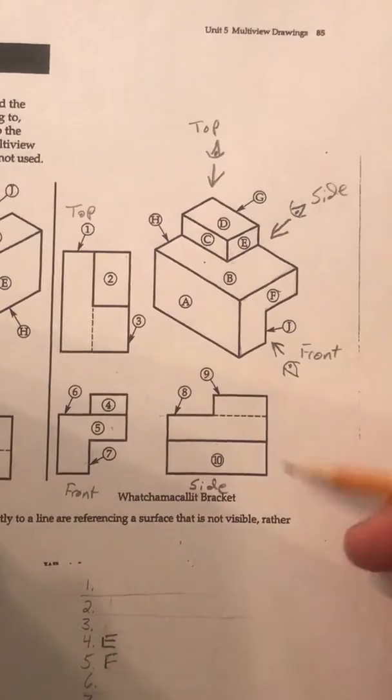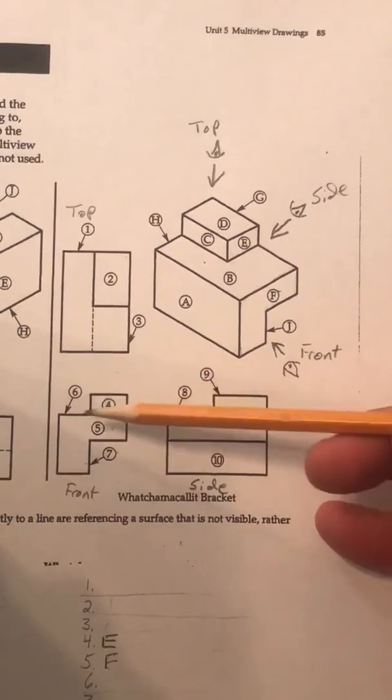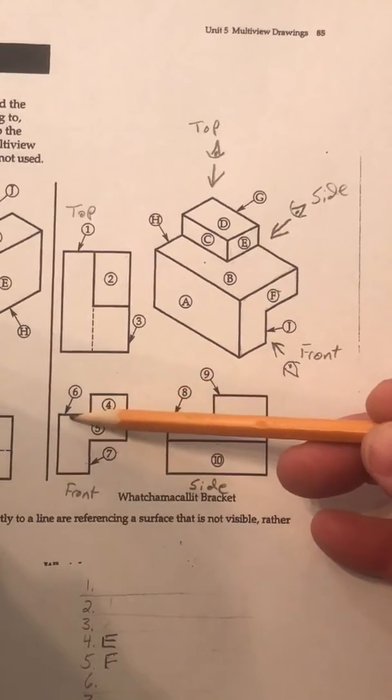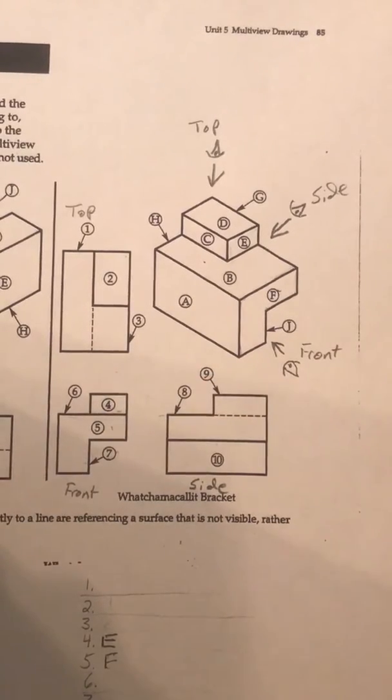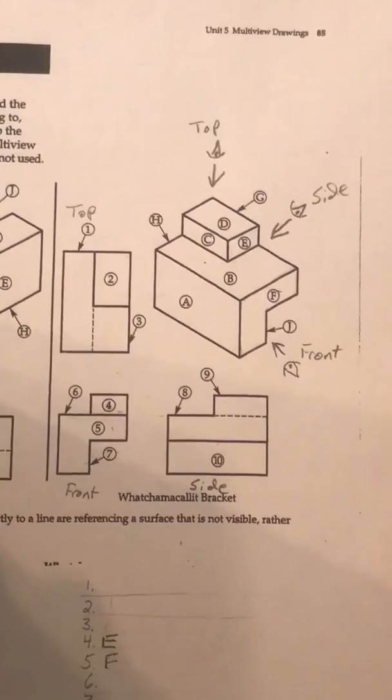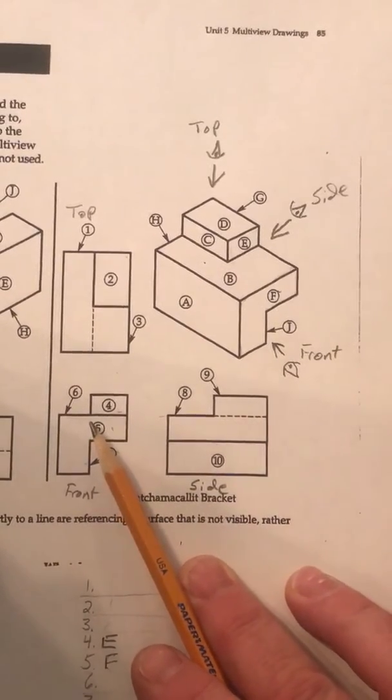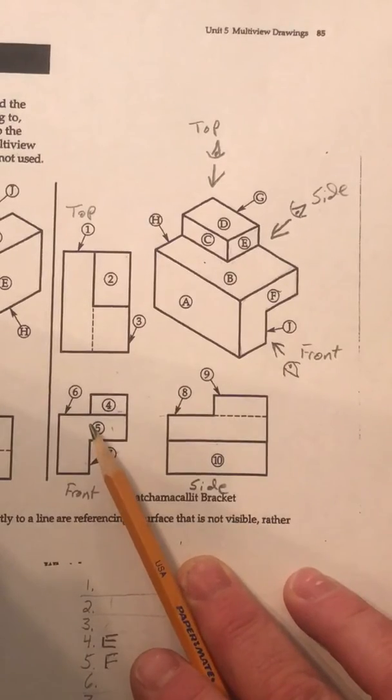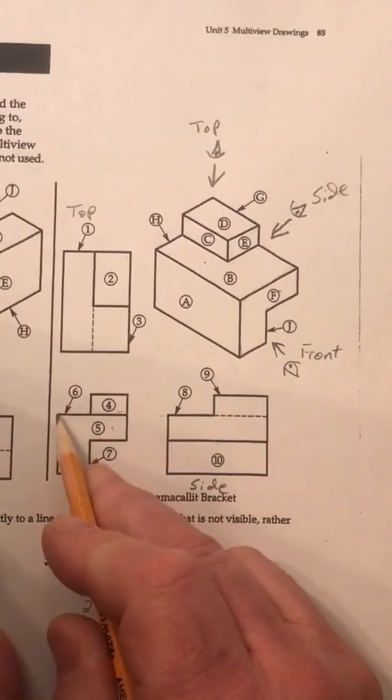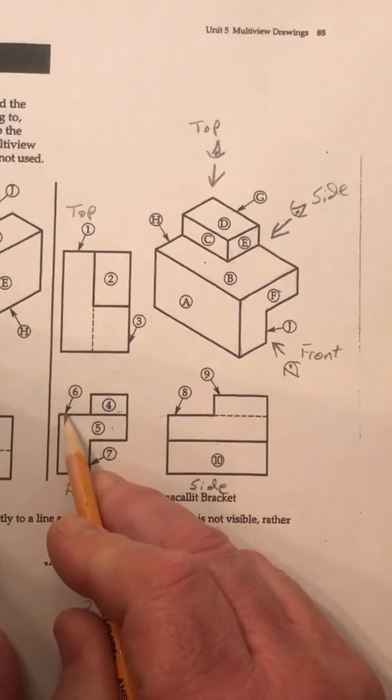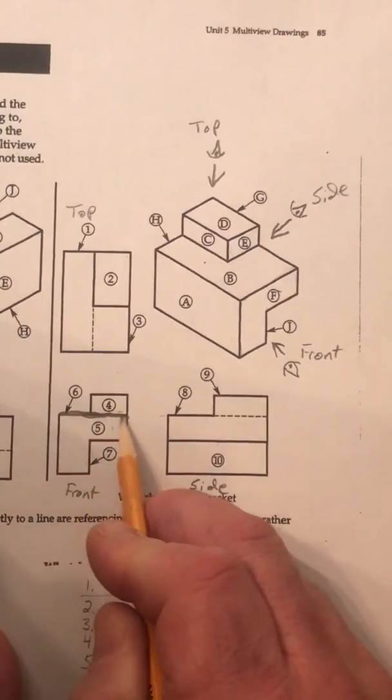Now I'm given two other numbers that I have to relate in this. They're going to be a little trickier. Here, the arrow actually points to the edge, or that line, and it's important to understand that the line that's being pointed to and referencing in this view might represent a surface that we see in another. And that's exactly the case. So, if I kind of take a look, this number 6 is pointing to this top line, or this top edge here.